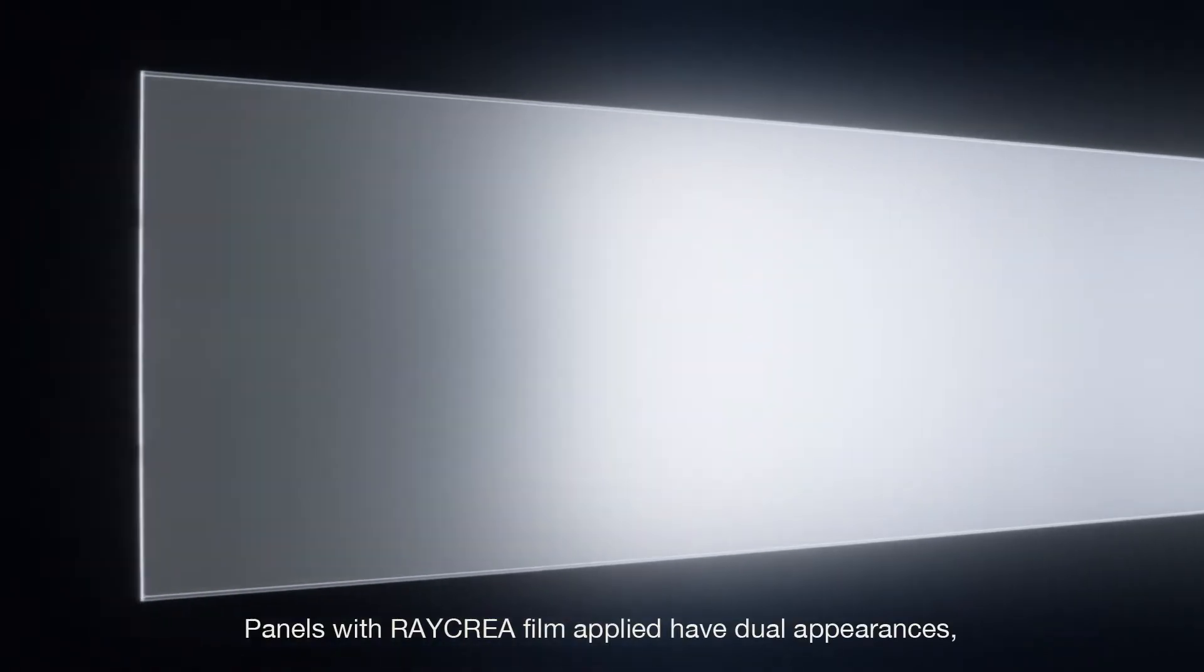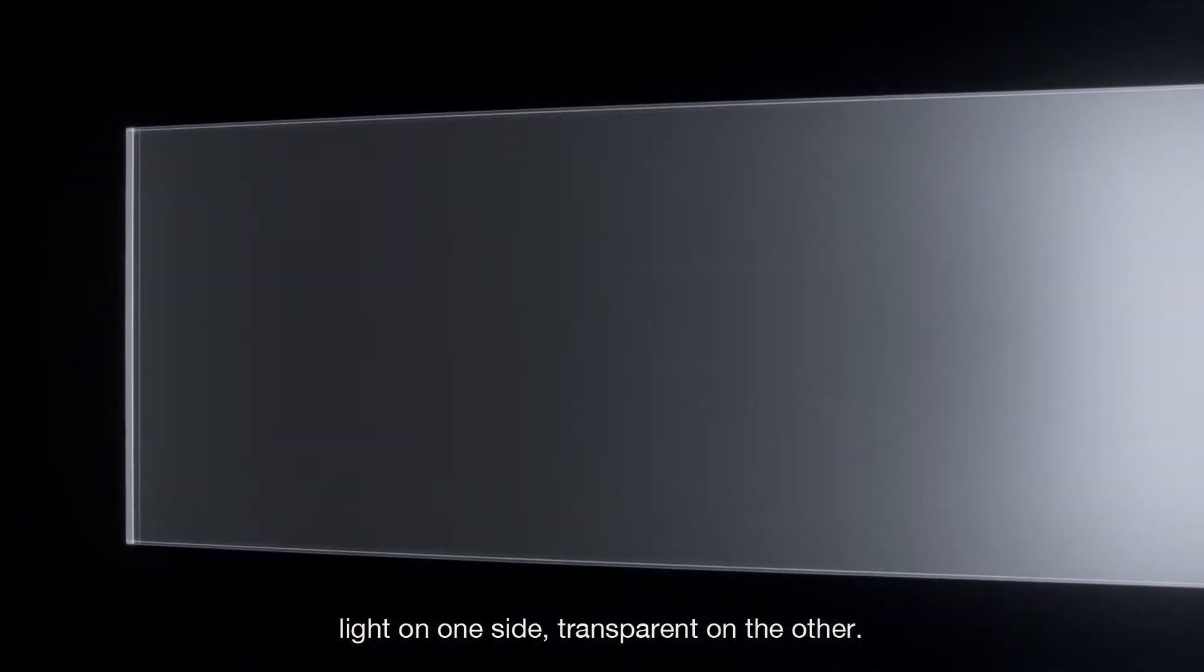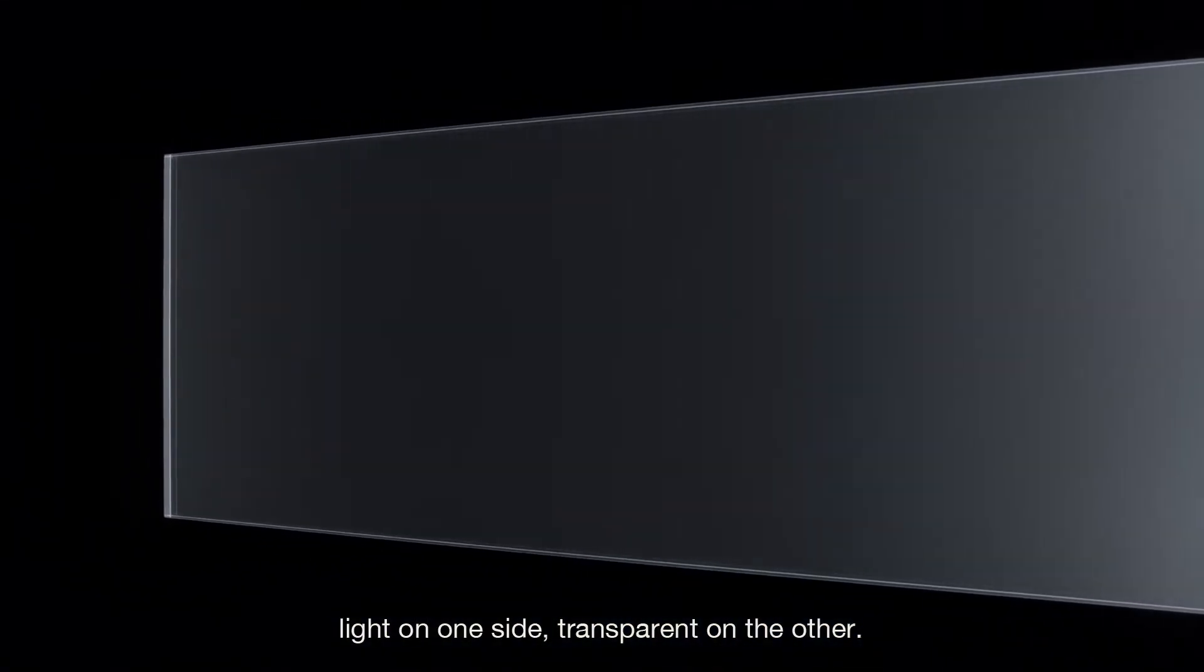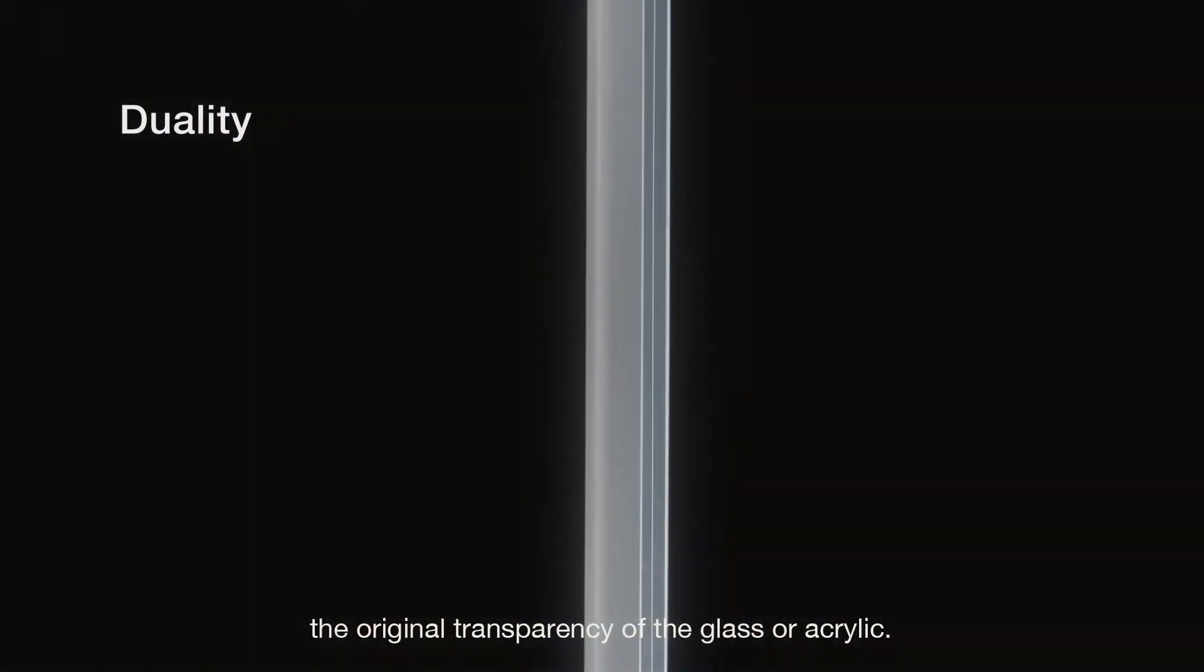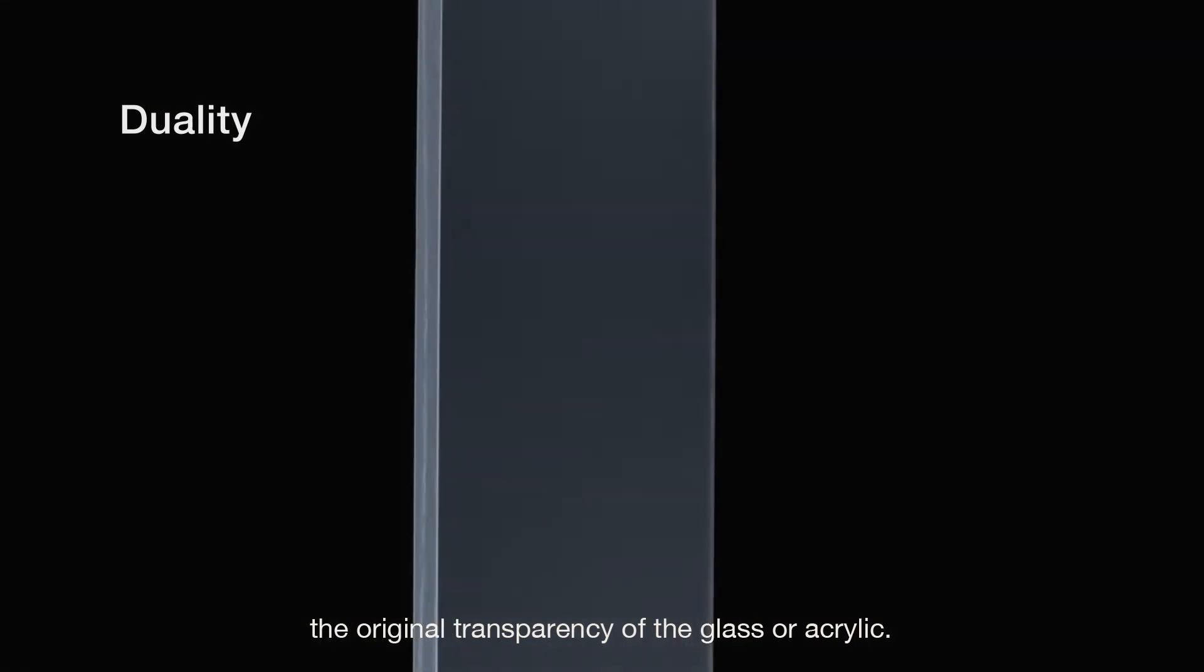Panels with Raycrea film applied have dual appearances. Light on one side, transparent on the other. When not emitting light, both sides retain the original transparency of the glass or acrylic.